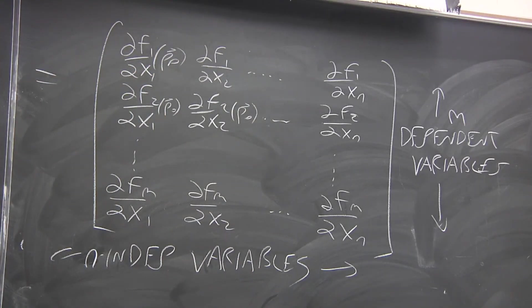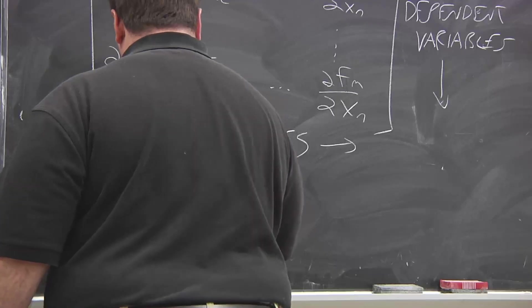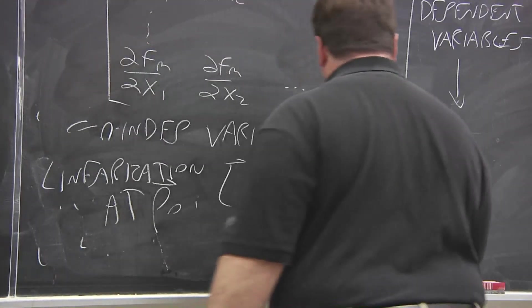So you have this matrix of m rows and n columns that represents the derivative. So when m and n are both equal to 1, that's just the derivative that you've known from single variable calculus. It's all the same thing. Even in this case, where we have several inputs and several outputs, we have a concise way of writing linearization at a given point.